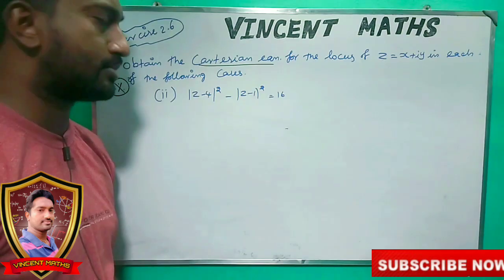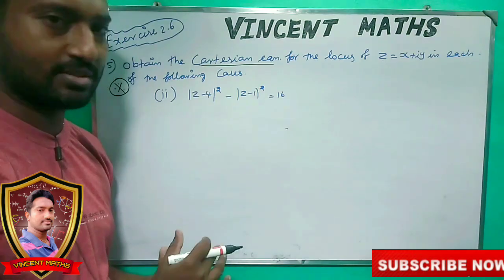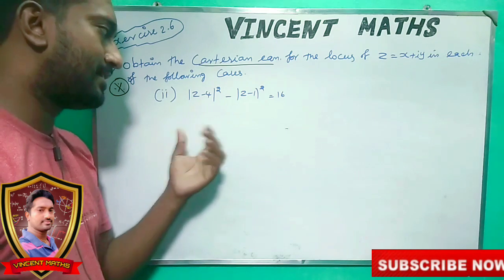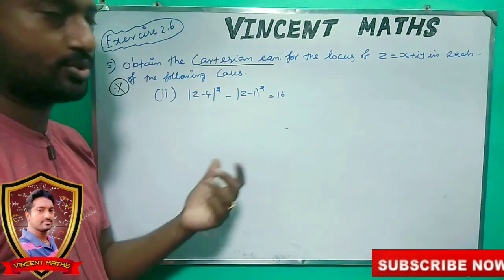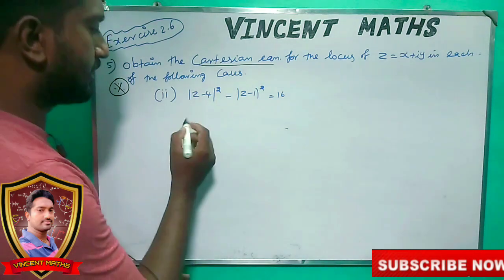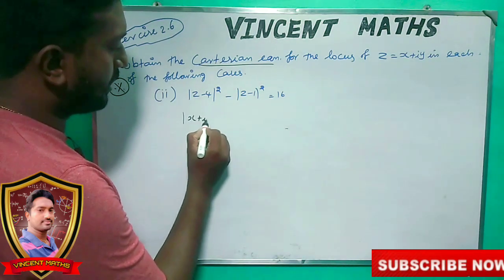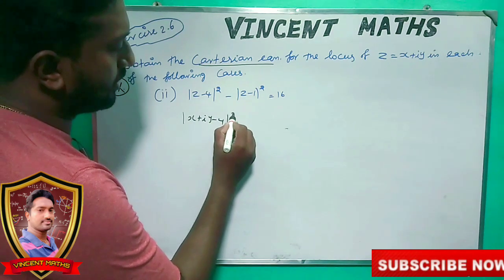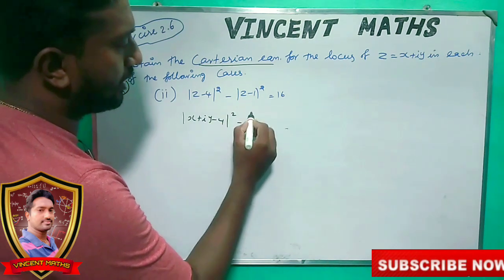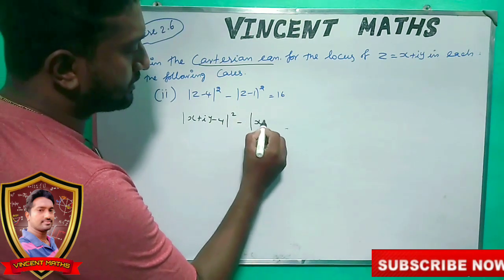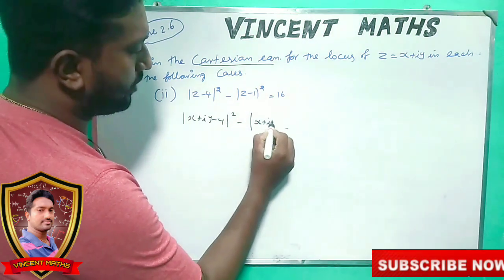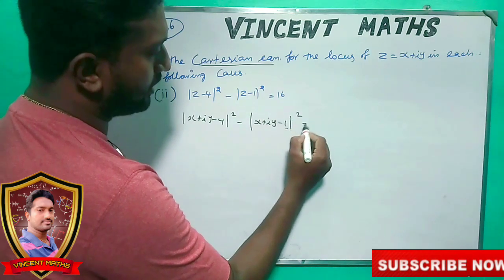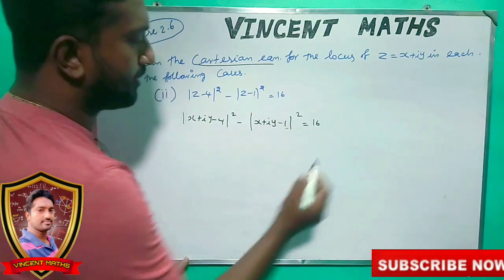Friends, let me see. We will see the same — that is the same. I substitute the value here. We see x plus y minus 4 the whole squared, then x plus y minus 1 minus 1 minus 1 of square equal to 16.